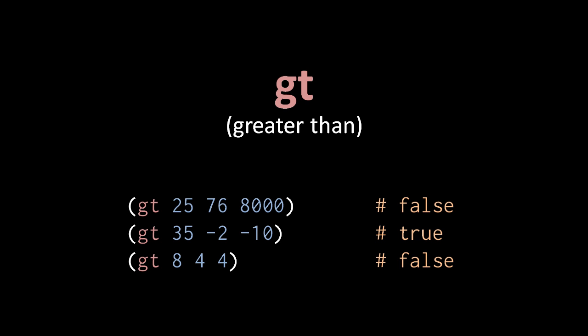So the first example here, GT 25 76 8000, returns false because 25 is not greater than 76, nor are they greater than 8000. And the second example returns true because 35 is greater than negative 2, which in turn is greater than negative 10. And the last example returns false because, yes, 8 is greater than 4, but 4 is not greater than 4.